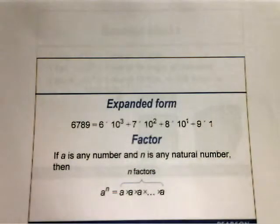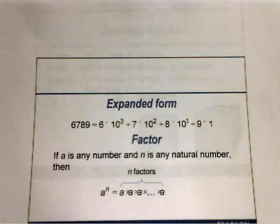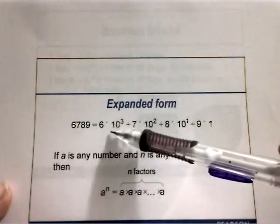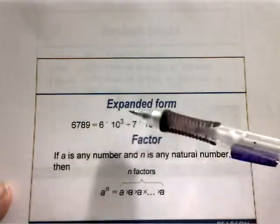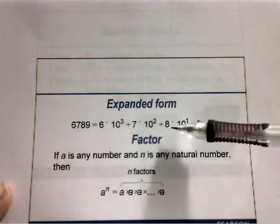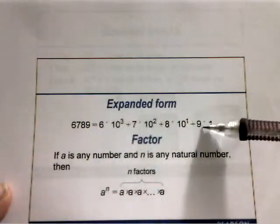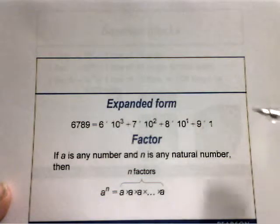This is what expanded form looks like. You take each individual digit and multiply it by some power of 10 depending upon its place value. For 6,789, the 6 is in the thousands place, so we write it as 6 times 10 to the third. The 7 is in the hundreds place: 7 times 10 squared. The 8 is in the tens place: 8 times 10 to the first. And the 9 is in the ones place: 9 times 1.